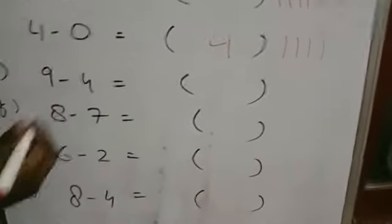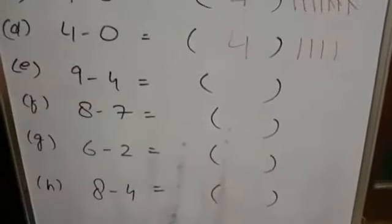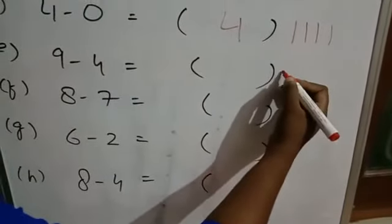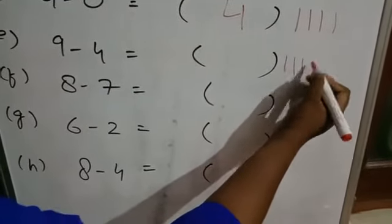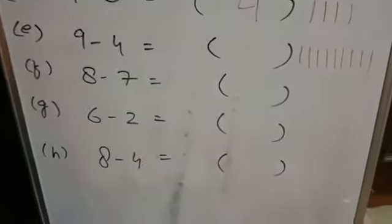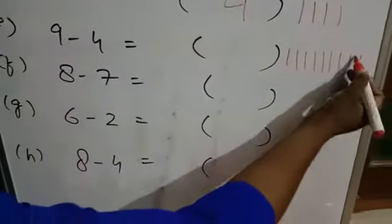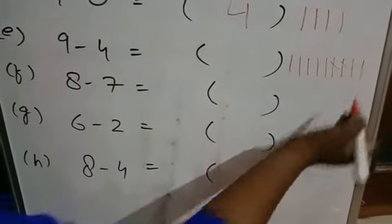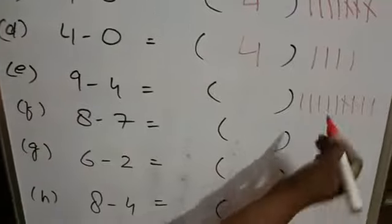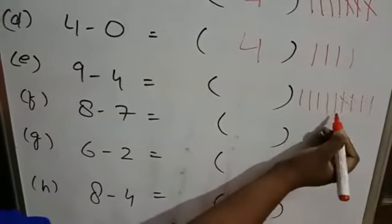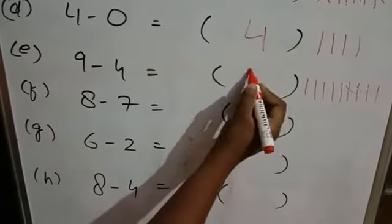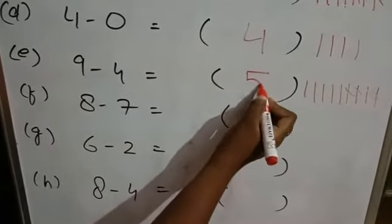Next, E: 9 minus 4. How many lines do you have to draw? 9 — 1, 2, 3, 4, 5, 6, 7, 8, 9. And how many lines do you have to cut? 4 — 1, 2, 3, 4. Count how many lines are left: 1, 2, 3, 4, 5. That means 9 minus 4 is equal to 5.